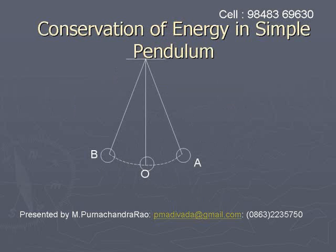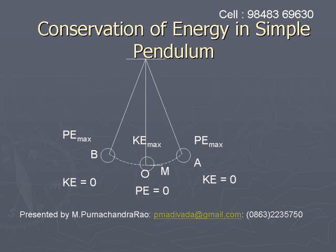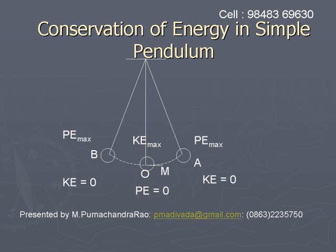Conservation of energy in a simple pendulum. Three positions of the bob are shown: O is the equilibrium position, A is the right extreme position, and B is the left extreme position. At the equilibrium position O, potential energy is zero and kinetic energy is maximum. At the extreme positions, kinetic energy is zero and potential energy is maximum. As the particle moves, its energy is converted from potential energy to kinetic energy and back.